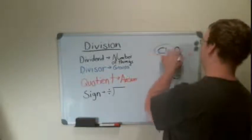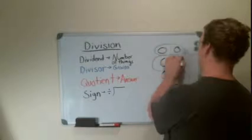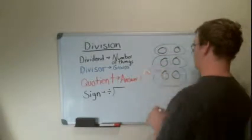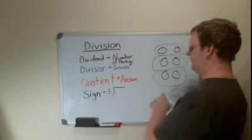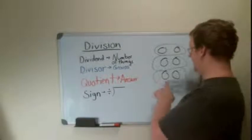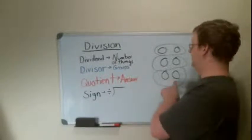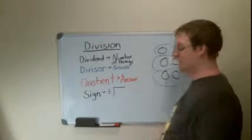We get one group, two groups, three groups. And we find out that our quotient or our answer is that there are two things in each group. So there are three groups of two things.